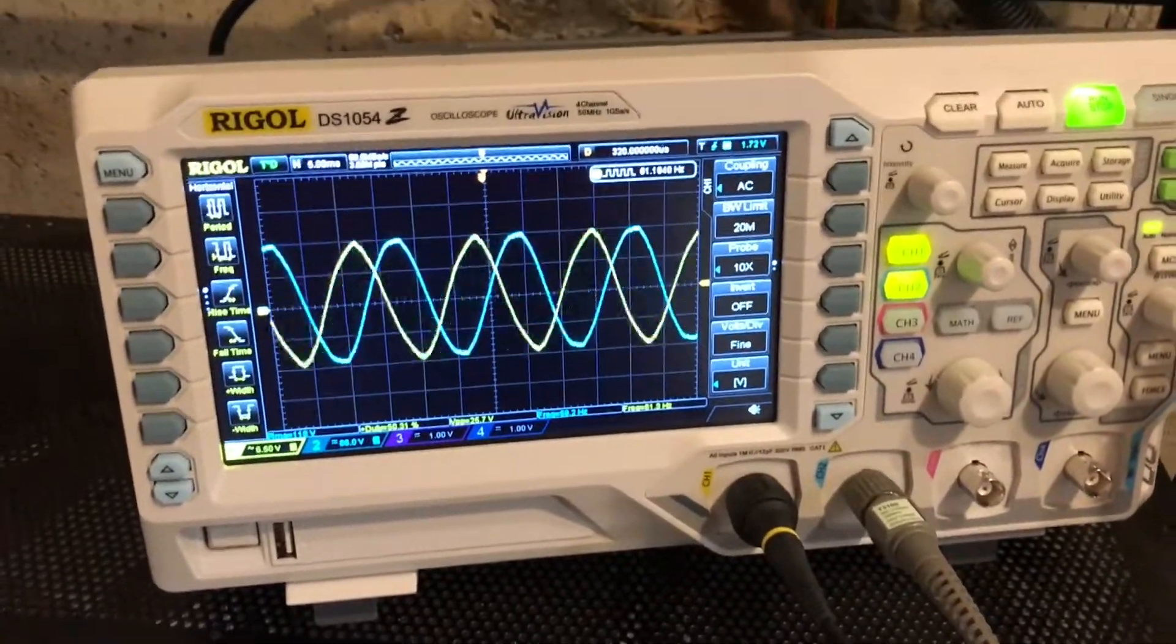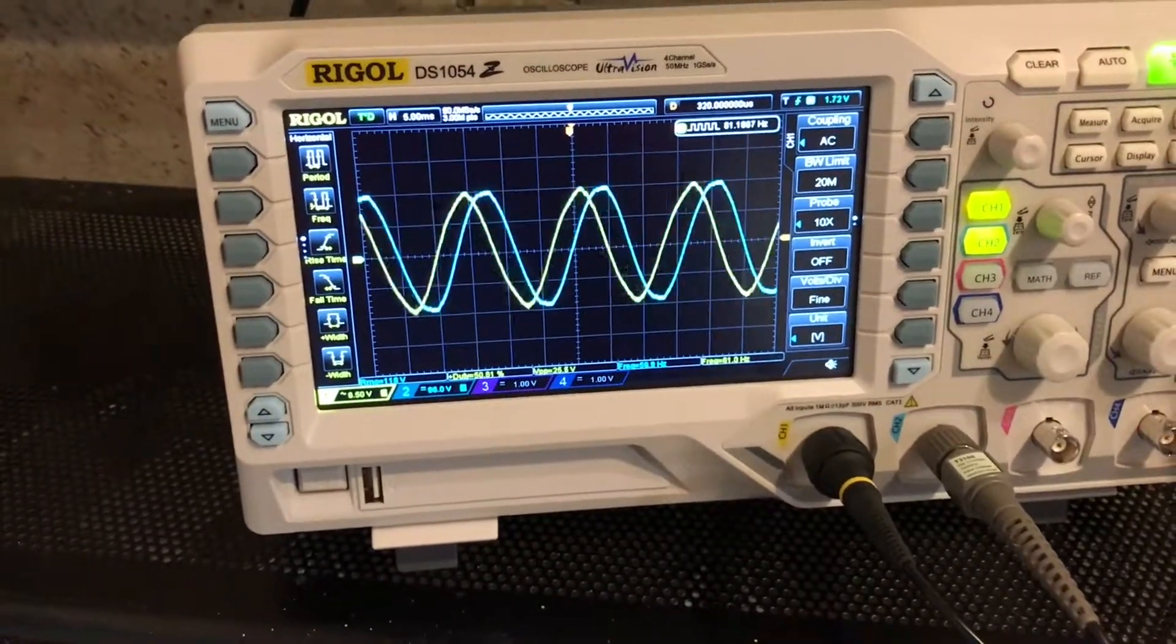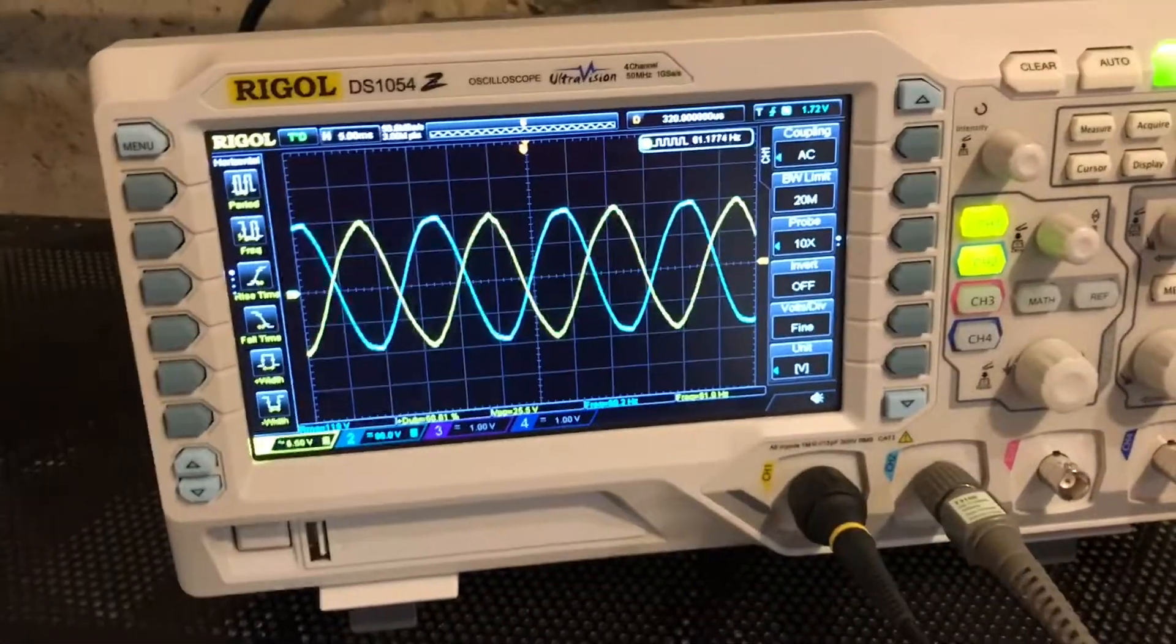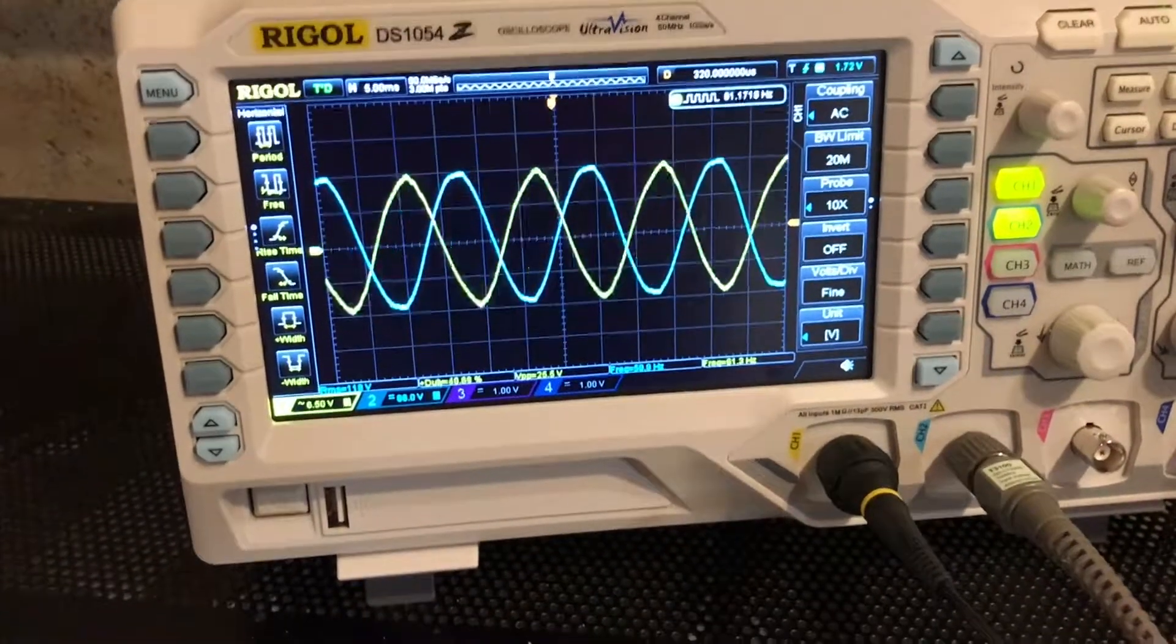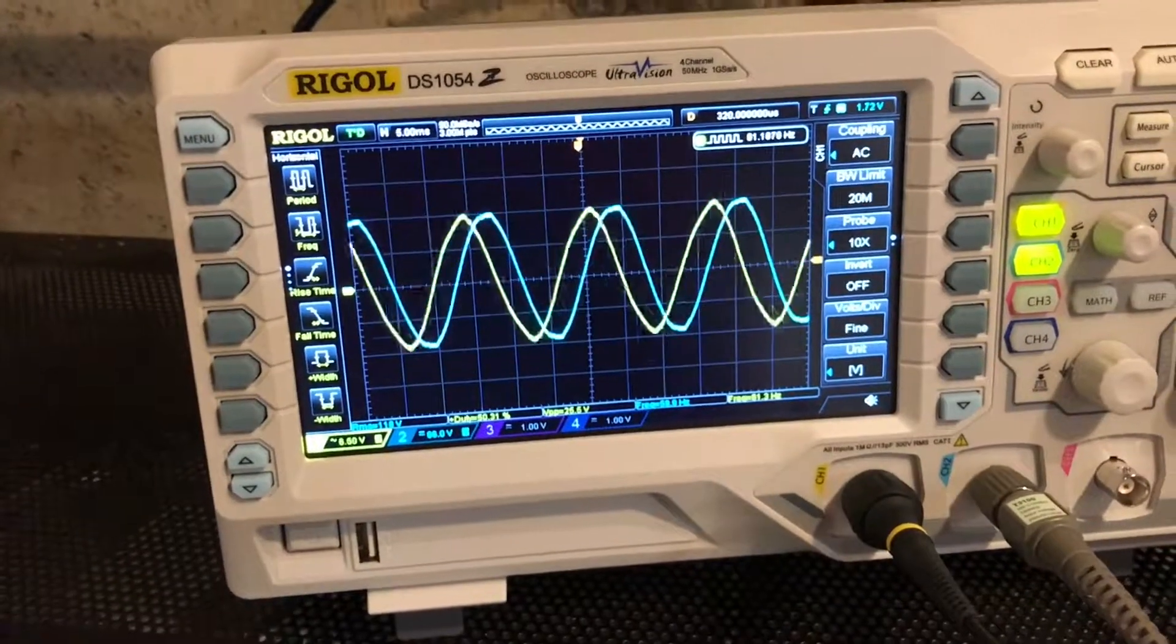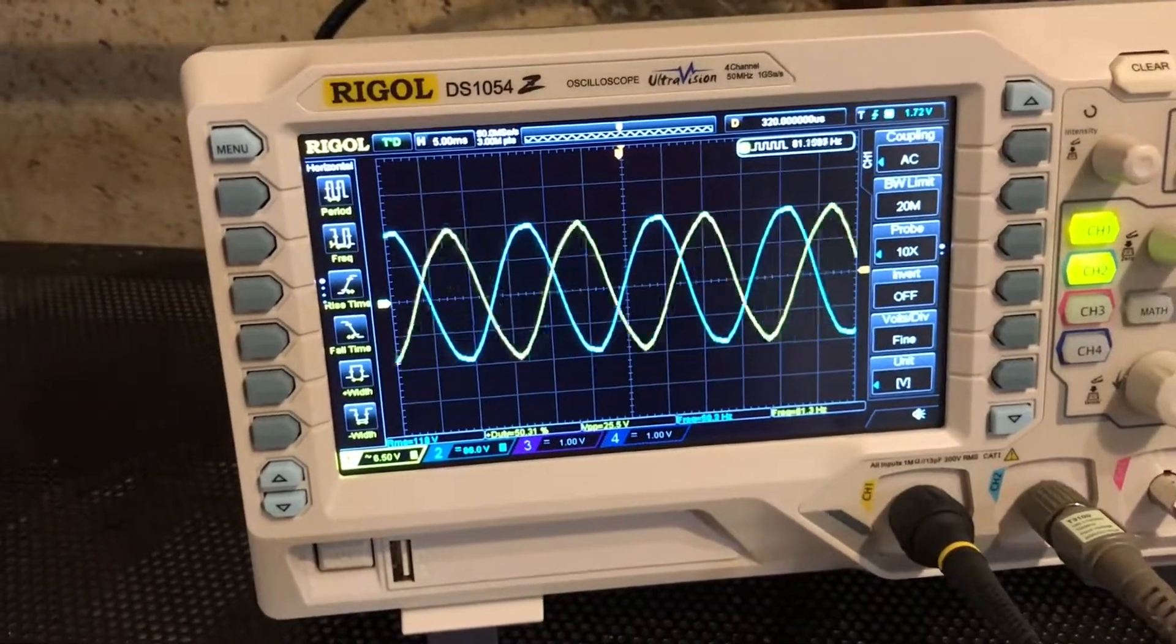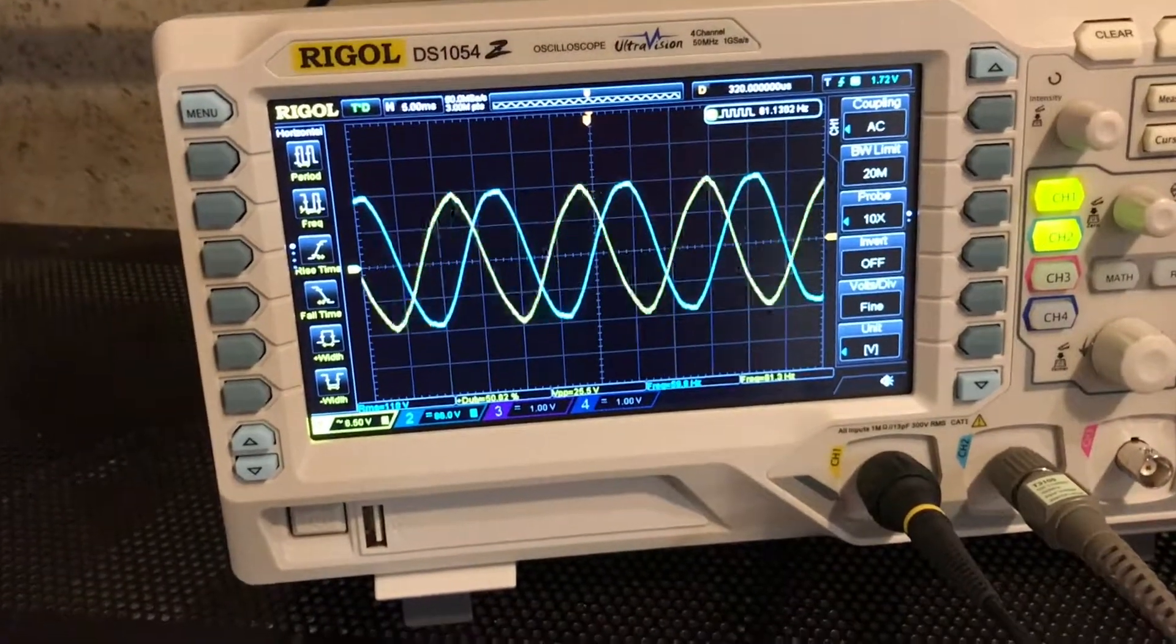So if I was to disable my physical interlock and turn that back-fed breaker on while my main is on, if these two were in phase - if they just happen to be in phase - probably nothing catastrophic would happen. I certainly wouldn't recommend it, but I don't believe anything would immediately catastrophically happen. However, if these are out of phase...